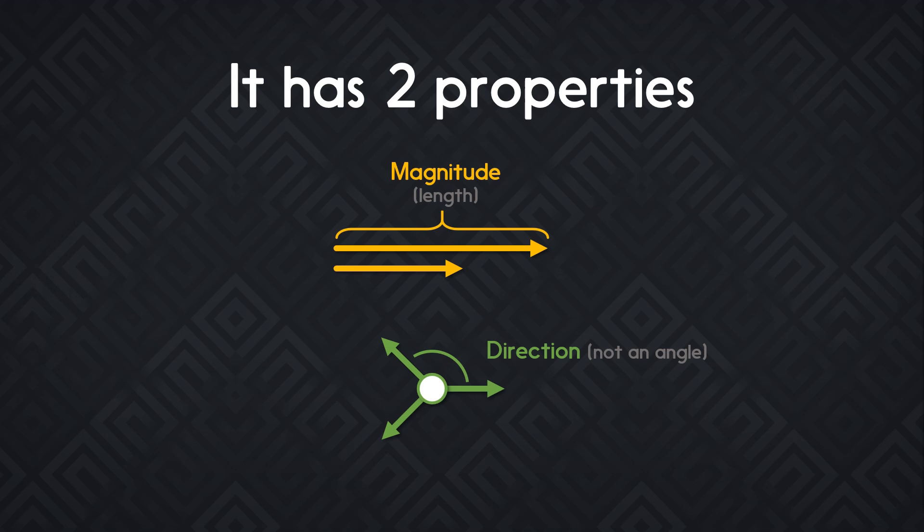The direction is not an angle. Interestingly, when we study vectors in France, we have three properties instead of two. We use two different words for the direction. You have the direction, that's kind of the angle of the line the vector is following. And then you have the way. For instance, if you want to go from Paris to London, it's not the same as if you want to go from London to Paris. Vectors compress the information of the distance and the way in which you are going in a single mathematical element.